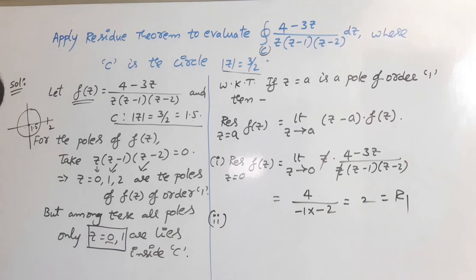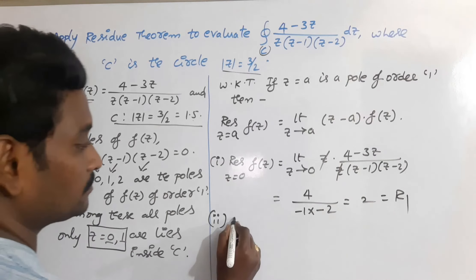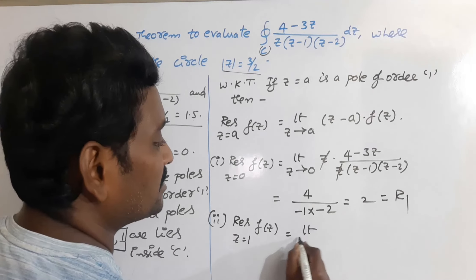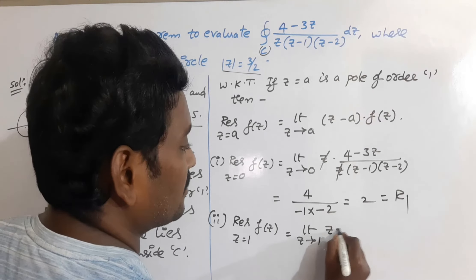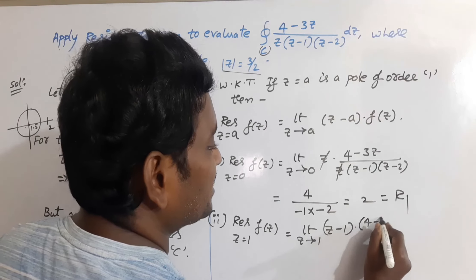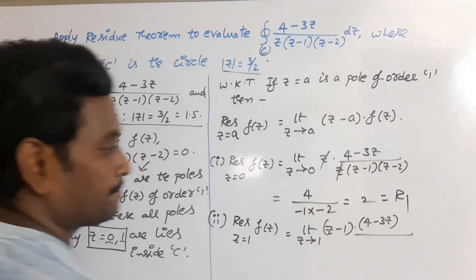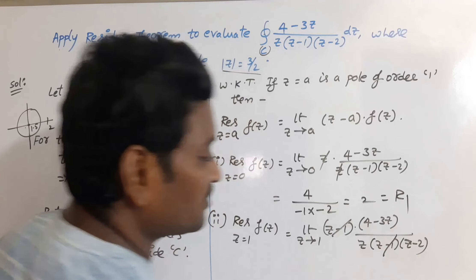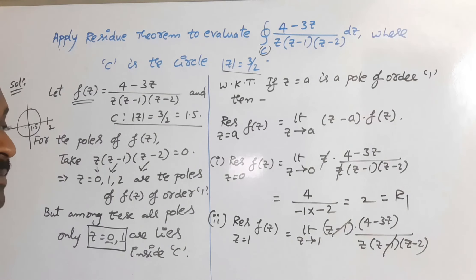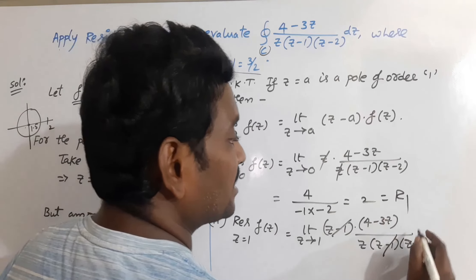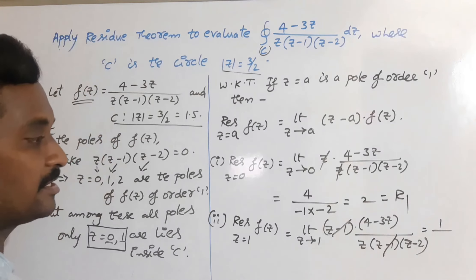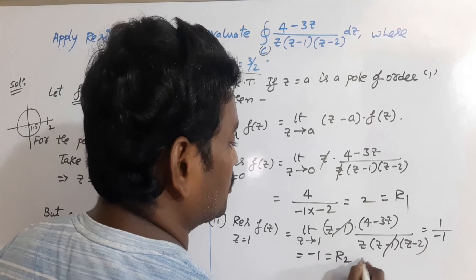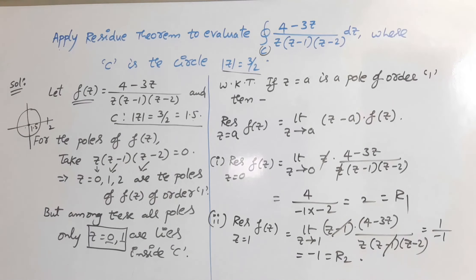Similarly, find the residue at the second simple pole z = 1. This equals the limit as z → 1 of (z − 1) · [(4 − 3z) / (z(z−1)(z−2))]. The (z−1) factors cancel, and replacing z with 1 gives (4 − 3) / [1·(1−2)] = 1 / (1)(−1) = −1. So R₂ = −1.